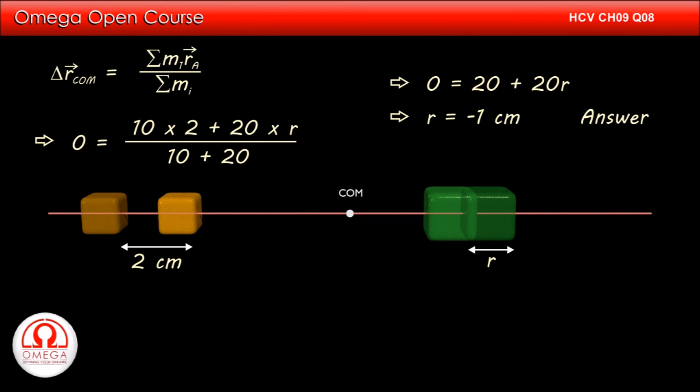This is our answer. The minus sign here signifies that the block must be moved in direction opposite to the direction in which the first block was moved.